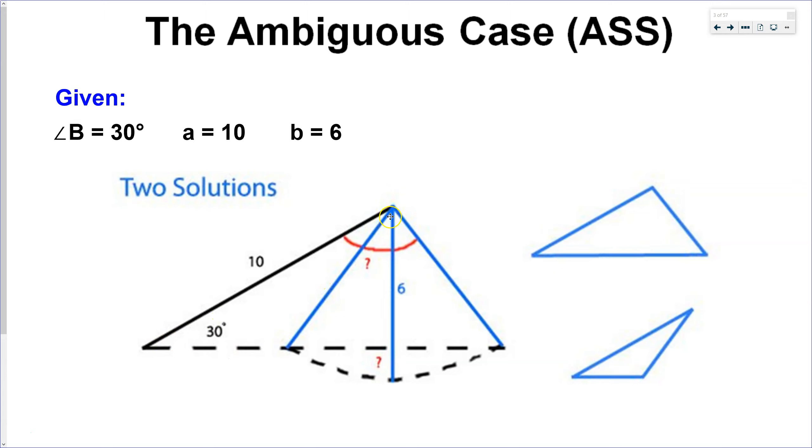Now, depending on the type of information given, that could result in two triangles, like we just kind of outlined there. But if this leg is too short, it won't even reach down here, so there won't be a solution.